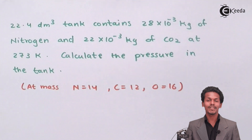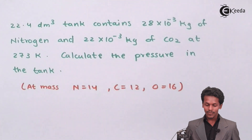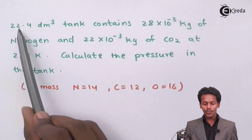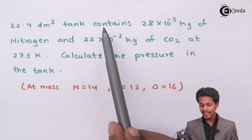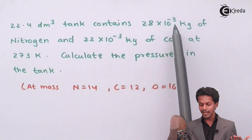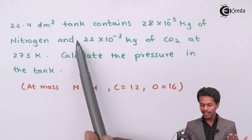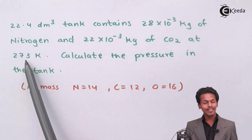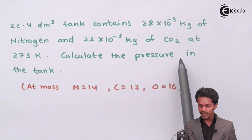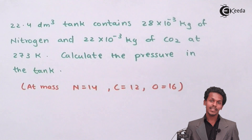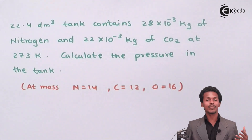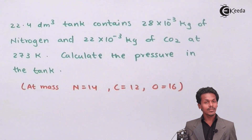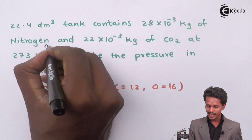This numerical is based on the ideal gas equation. The question states that we have a 22.4 dm³ tank which contains 28×10⁻³ kg of nitrogen gas and 22×10⁻³ kg of carbon dioxide gas at 273 Kelvin. We have to calculate the pressure in the tank. Both gases — carbon dioxide and nitrogen — are present in the gaseous state.